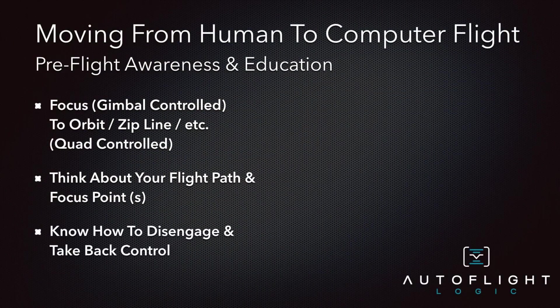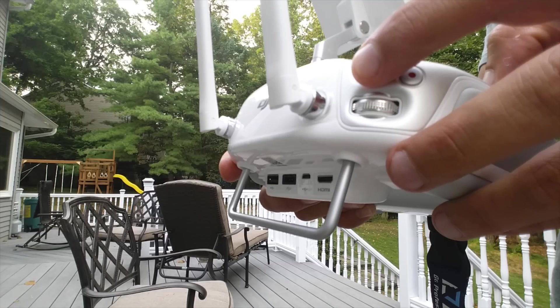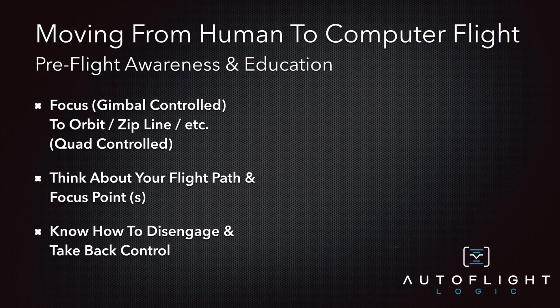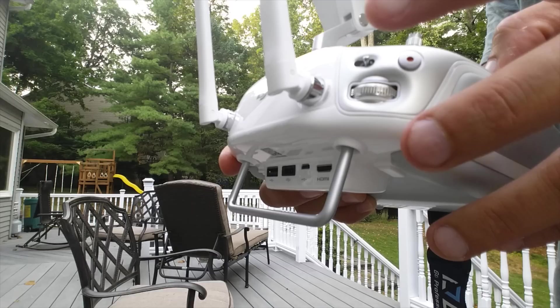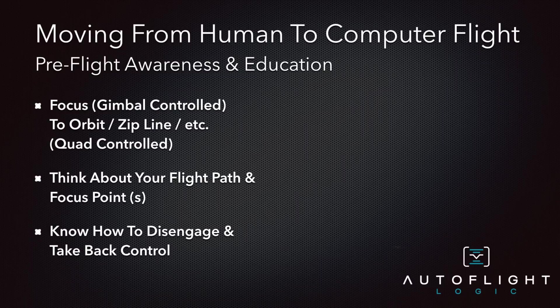It's very important to know where the PF switch is. If the quad ever starts heading in a direction or distance that you don't like, flick that switch from F to P. You might even run into a situation where you think you've lost control of your quad — again, flick that switch from F to P and you'll regain control to fly the quad manually. If needed, you can even switch back to the DJI Pilot app to bring your quad home.